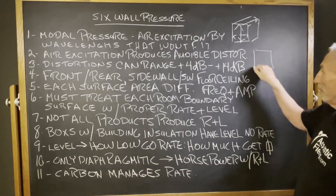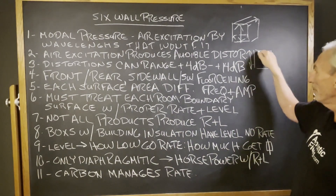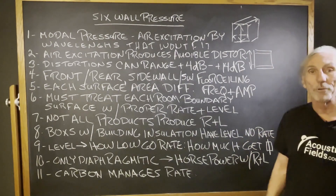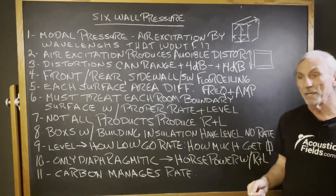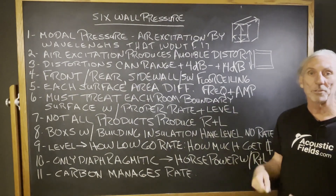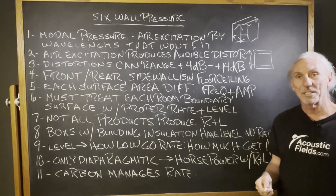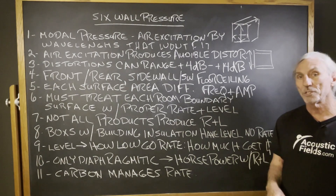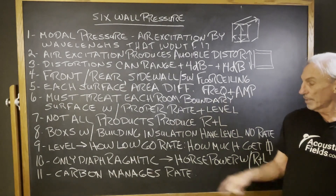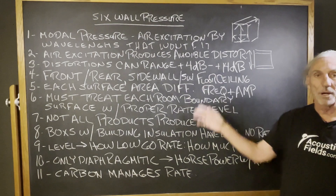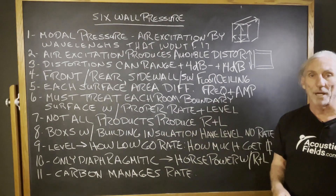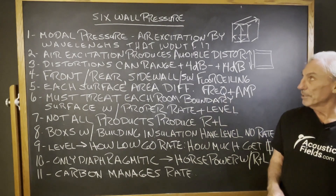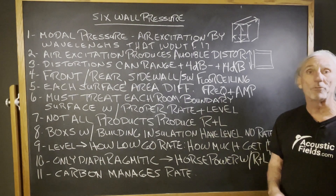So how are we going to treat the floor-to-ceiling dimension? We've got to address both the ceiling and the floor. Most people opt for the floor and look at our carbon platforms — the same technology used in the carbon panels in the ACDA series, only in a platform you can sit your workstation or listening position on. Our carbon platforms are all part of diaphragmatic absorption, which is our primary methodology. Six-wall pressure — it's just not about four.